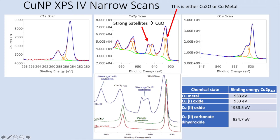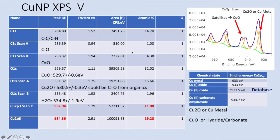Is it Cu2O or Cu metal? And then this is O1S — it's pretty smooth. Here are the values I copied from the database. There's only about a half-volt difference, and we may have a carbonate or dihydroxide component. Sorry, I'm not a chemist.